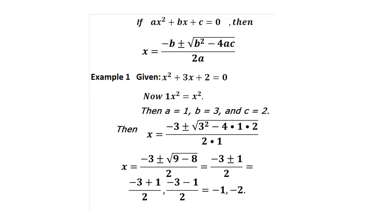We have the equation ax² + bx + c = 0. It is always given that x equals minus b, plus or minus the square root of b² minus 4ac, all divided by 2a. This is called the quadratic formula.